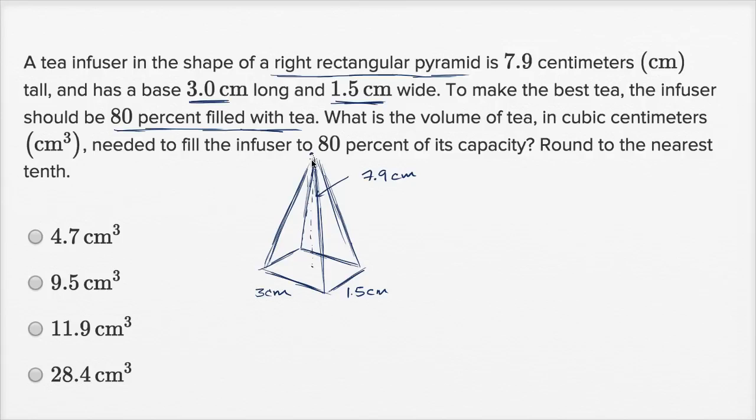So what we can do is we can first find the volume of this right rectangular pyramid. And then they say that it should be 80% filled with tea. So we need to figure out what 80% of its volume is. And then that's gonna tell us what's the volume of tea needed to fill the infuser to 80% of its capacity. Now, you might be saying, how do I figure out the volume of a right rectangular pyramid? Well, I'm about to tell you that.